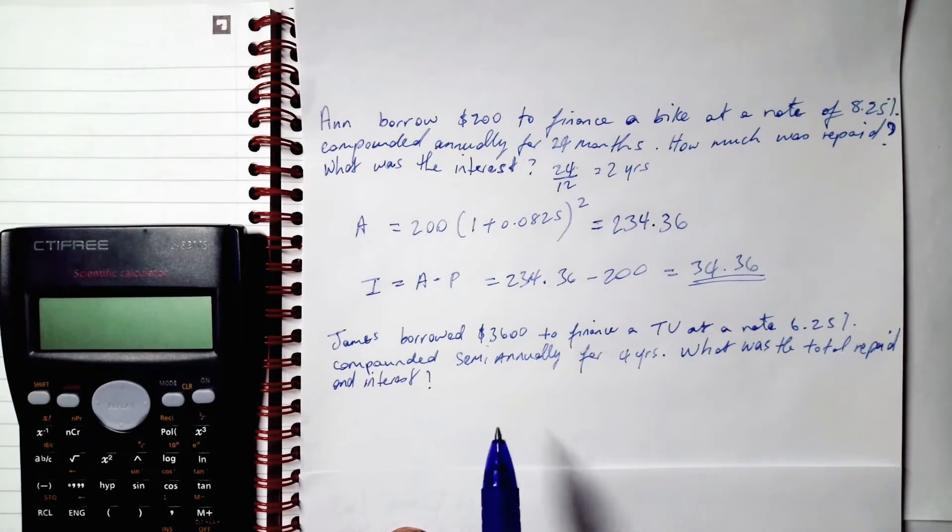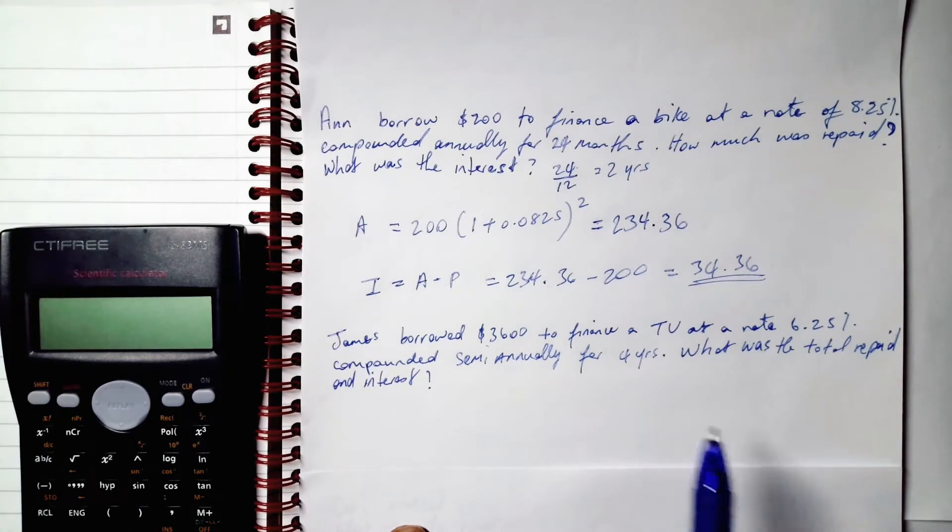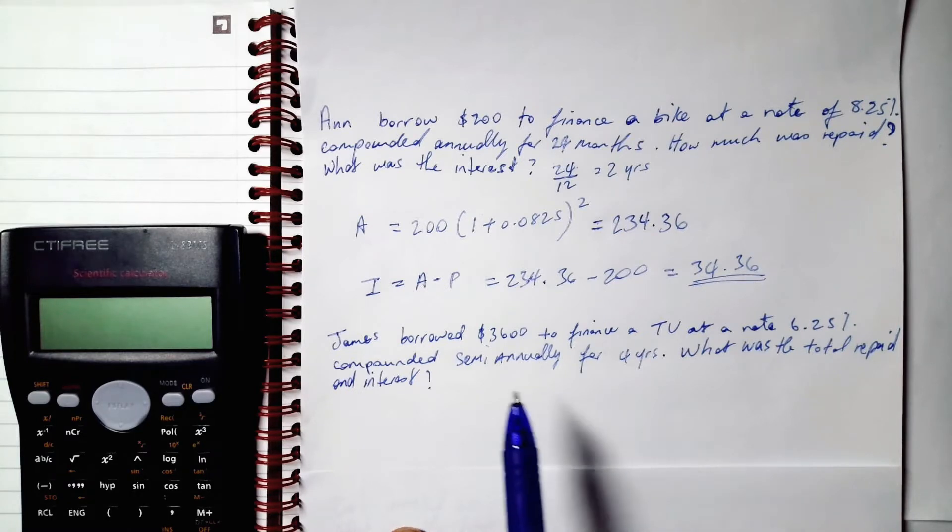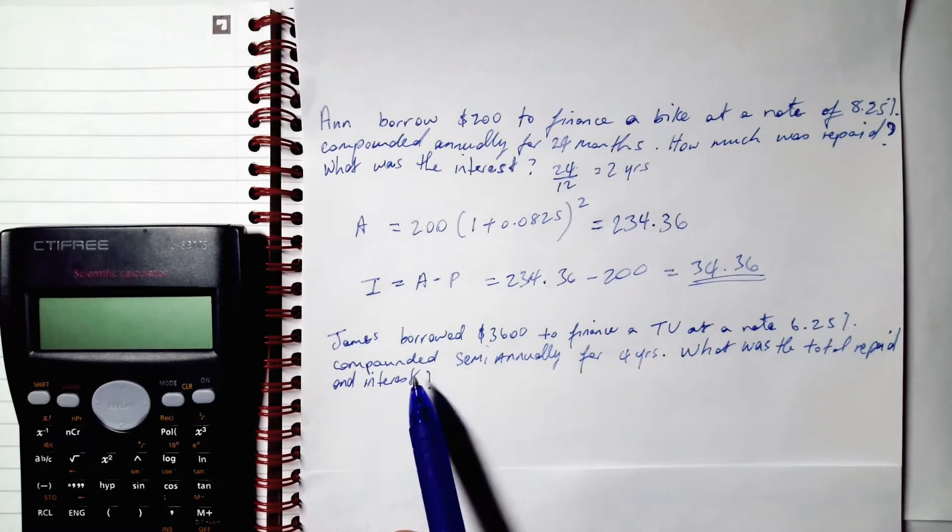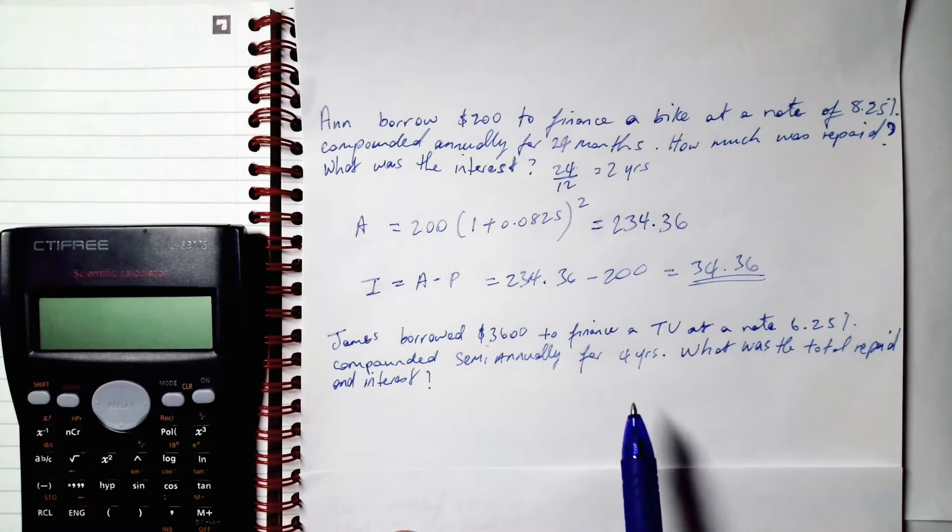So our n represents how many times our interest rate is compounded in a year. I'll repeat that: our n represents how many times our interest is compounded in a year.